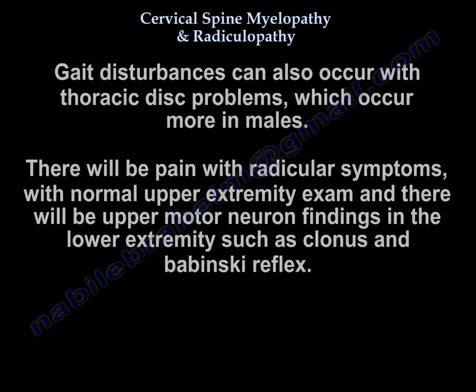Gait disturbance can also occur with thoracic disc problems, which occur more in males. You will have pain with radicular symptoms, a normal upper extremity exam, and upper motor neuron findings in the lower extremity such as clonus and Babinski.